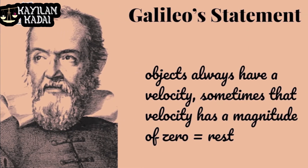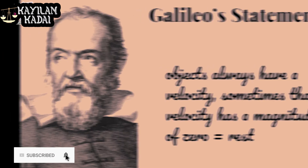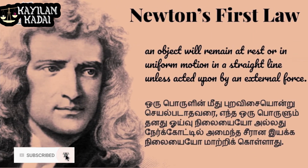This is also related to Galileo's law. He said that objects always have a velocity — sometimes that velocity has a magnitude of zero, which is equal to rest. But Newton's first law states that an object will remain at rest or in uniform motion in a straight line unless acted upon by an external force.